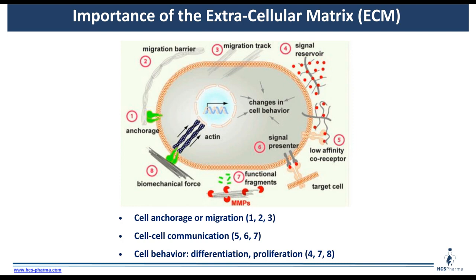The extracellular matrix is of great importance in tissue and cell biology. It is important in cell anchorage and migration. It is also involved in cell-cell communication, since it is a reservoir for signaling molecules like cytokines and growth factors. The matrix interacts directly with cells through receptors, and there is a high impact of the matrix on cell behavior in general — in terms of differentiation and proliferation — because the mechanical forces of the ECM impact cell behavior. Also, the cells themselves impact the matrix because they can produce proteinases that affect its structure and composition.